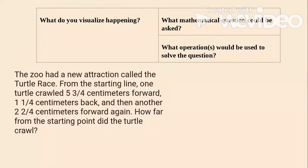The zoo had a new attraction called the Turtle Race. From the starting line, one turtle crawled 5 3/4 centimeters forward, 1 1/4 centimeters back, and then another 2 2/4 centimeters forward again. How far from the starting point did the turtle crawl?